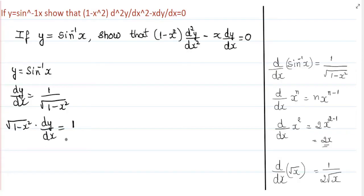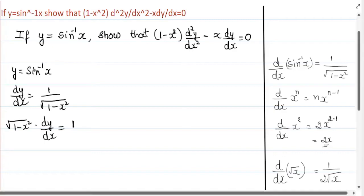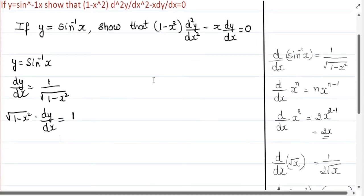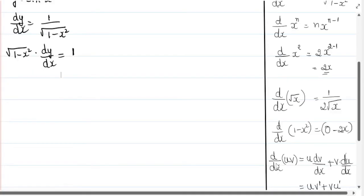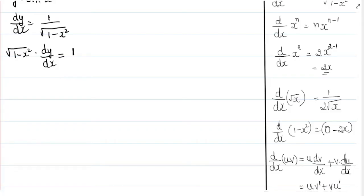Now, we need to differentiate this equation again with respect to x. For that, we need to apply the product rule. The product rule states: d by dx of uv equals u into dv by dx plus v into du by dx. We need to apply this rule here — let us consider root of 1 minus x squared as u and dy by dx as v.